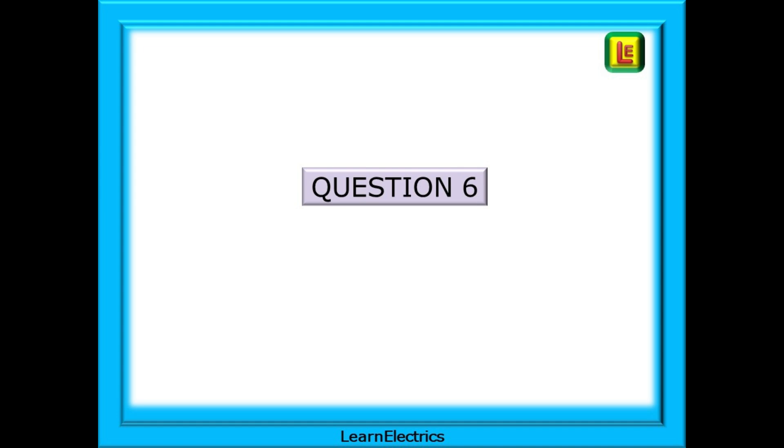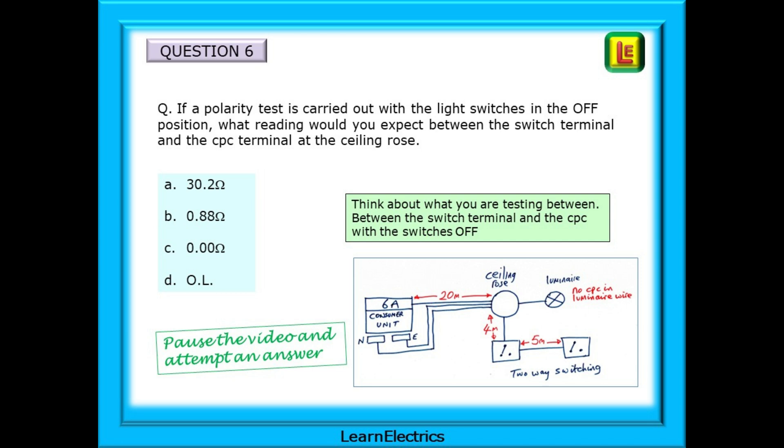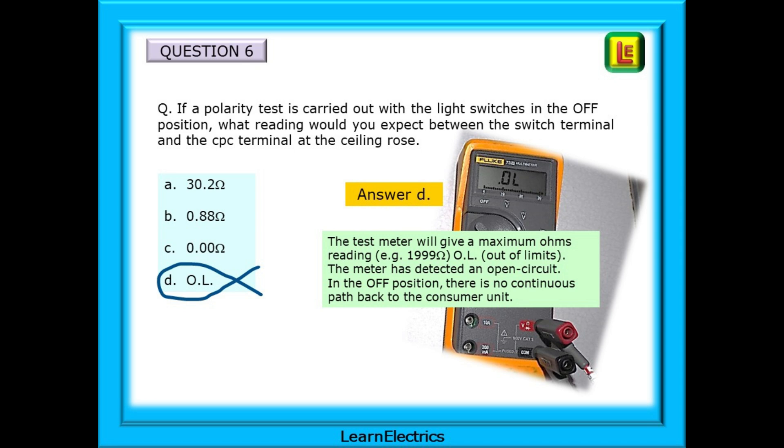And now to question 6. We are asked if a polarity test is carried out with the light switches in the off position what reading would you expect between the switch terminal and the CPC terminal at the ceiling rose? Think about what you are testing between, between the switch terminal and the CPC with the switches off. The answer choice is D. The test meter will give a maximum ohms reading. Some meters will show this as 1999 ohms or 9999 ohms whatever the maximum the meter can display. Others like mine will show it as OL or over limit. The reading is higher than the meter can display and the meter has effectively detected an open circuit.